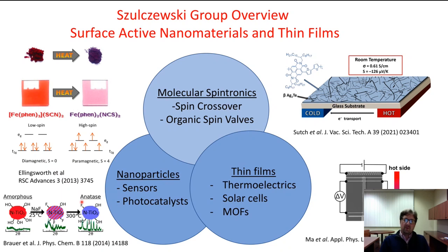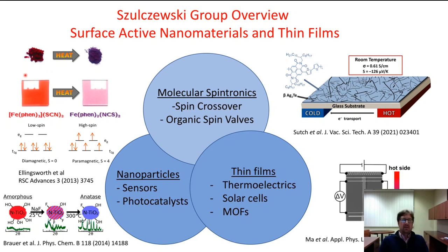We've also worked in the area of molecular or organic spintronics — using organic semiconductors in device applications. We've made things known as organic spin valves, which are sensitive to external magnetic fields. We've also studied the phenomenon known as spin crossover, where a transition metal complex undergoes a spin state change as a function of temperature. For this iron phenanthylene-based compound, it's thermochromic — changing its color with temperature — and it also changes its spin state, making it sensitive to external magnetic fields.